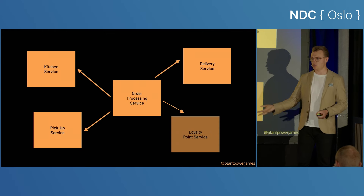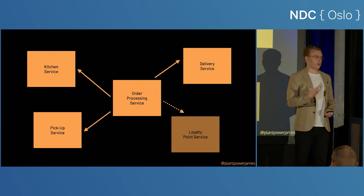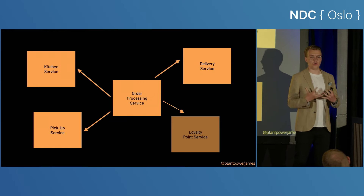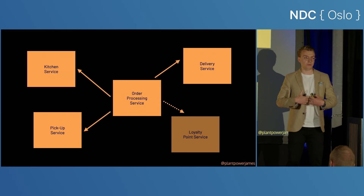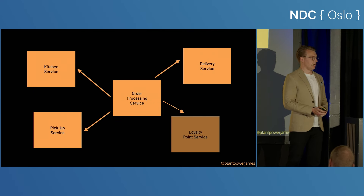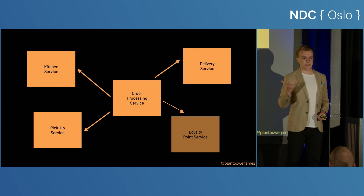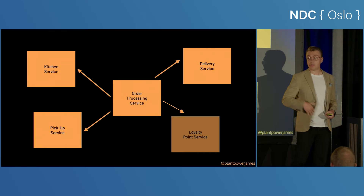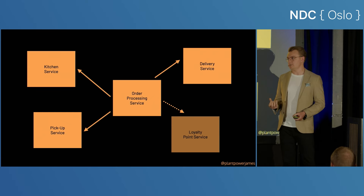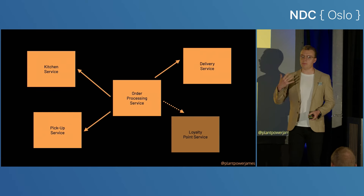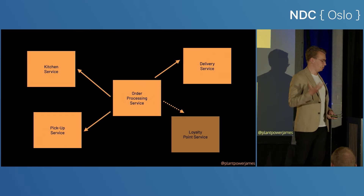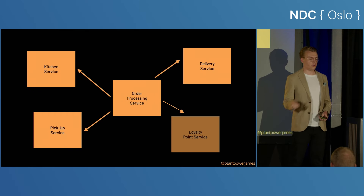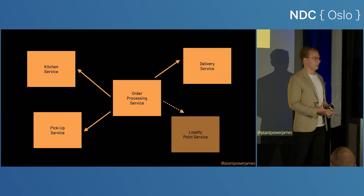You've got this core order processing service — this is the core domain, the thing that holds all the business logic, that allows people to place orders and get pizzas delivered. But you've got all these other ancillary services around the outside, and all these things have a hard dependency on the order service. Now you need to add a loyalty point service, and to do that you need to go back and make changes to your order processing service. This, of course, is a form of coupling.